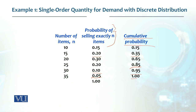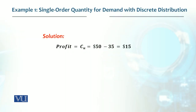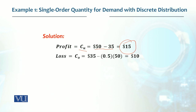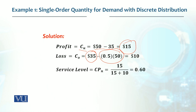On this basis, we need to determine how much quantity we should order. The cost of understock is the profit margin, that is $50 minus $35 which is $15. Similarly, the cost of overstock is $35 (the cost paid) minus $17.50 (sold at 50% discount), which gives a cost of overstock of $10. The service level is 15 divided by 15 plus 10, which gives 60 percent, that is a service level of 0.6.